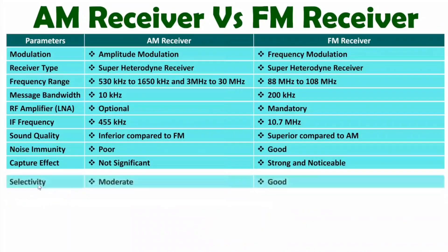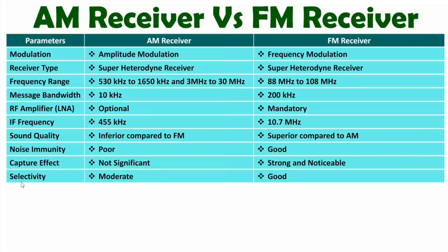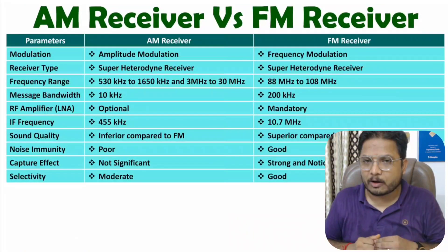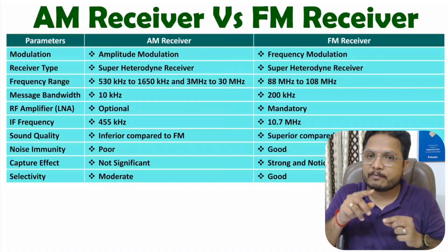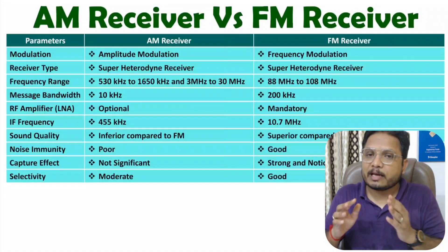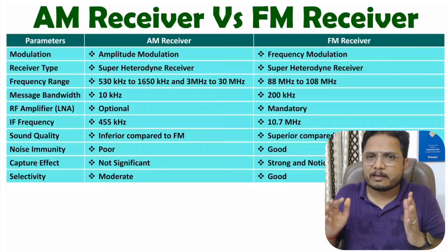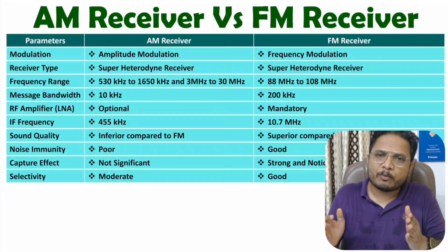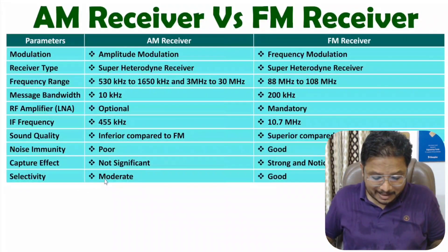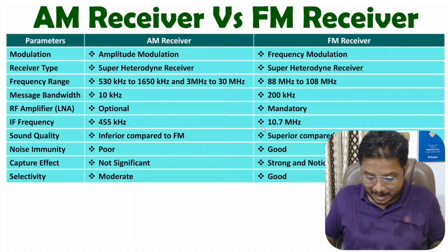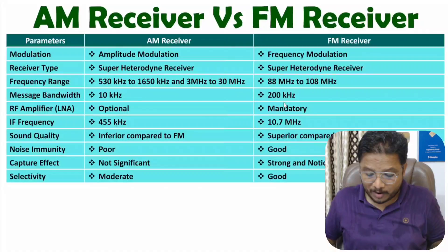The next parameter is selectivity. Selectivity is based on the quality factor of the receiver. Quality factor is center frequency divided by bandwidth — if we have wider bandwidth, we have better quality factor. Selectivity is moderate with AM receiver and good with FM receiver, because FM receiver has wider bandwidth.